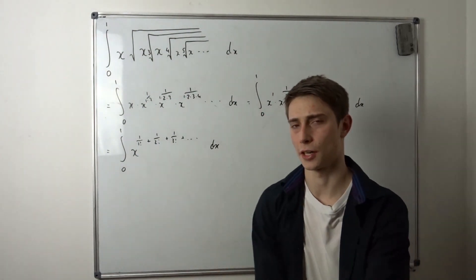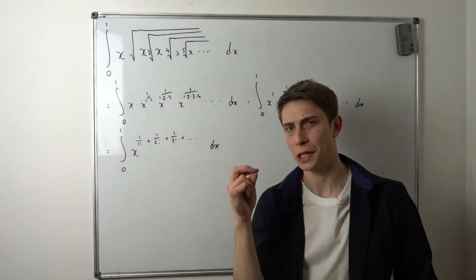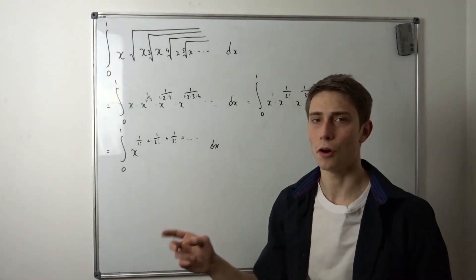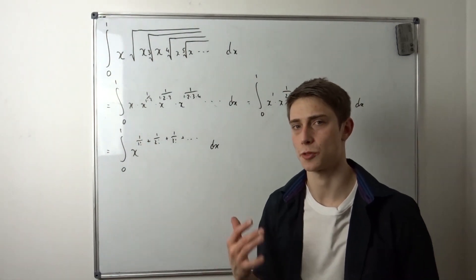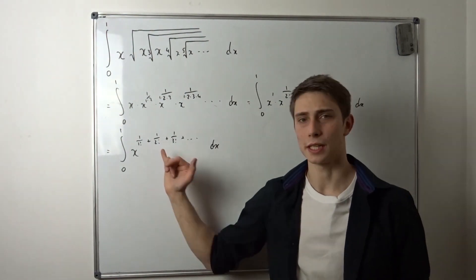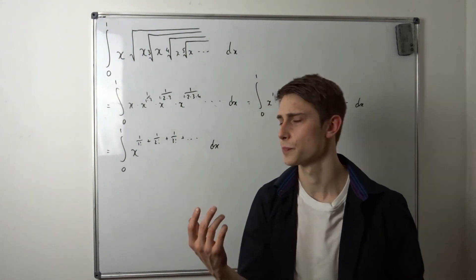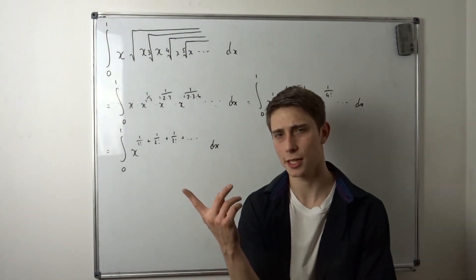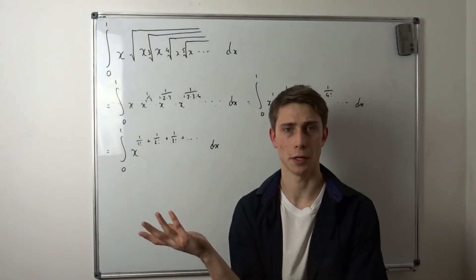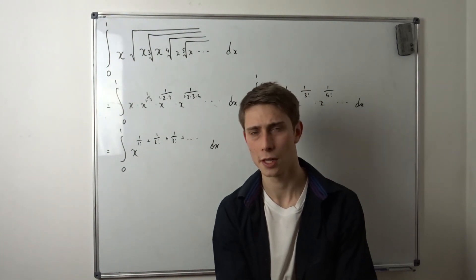And this right here looks kind of familiar. If we would just add a one over zero factorial to this thing, so that would just be a one, we would get an exponential function of the first power. But can we just add a one? Well we can, but we have to subtract it right again. So we can do this.